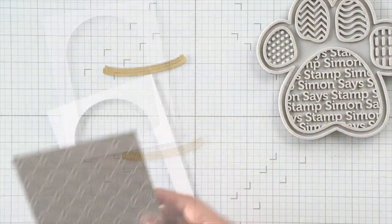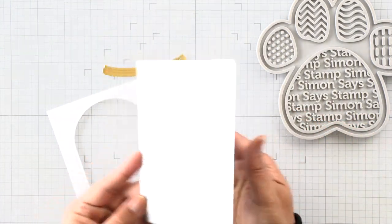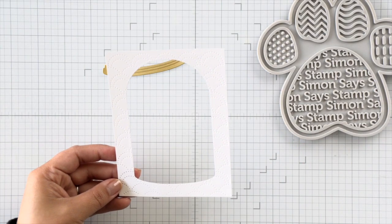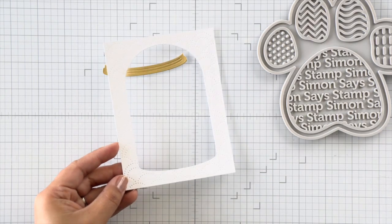Alright, so I have my frame die cut here and I just really wanted the border to be a bit more decorative. So I'm using the dotted scallops cover plate here to add some texture to that frame.